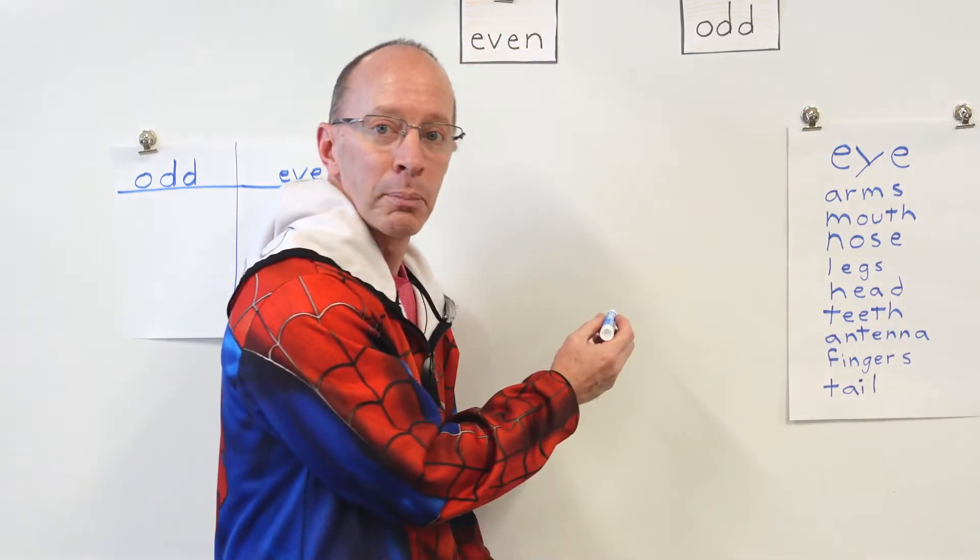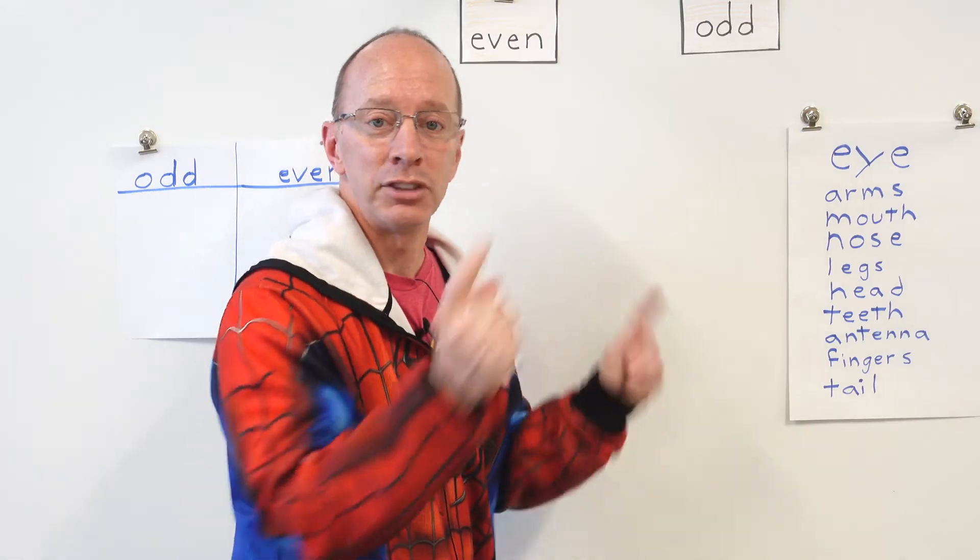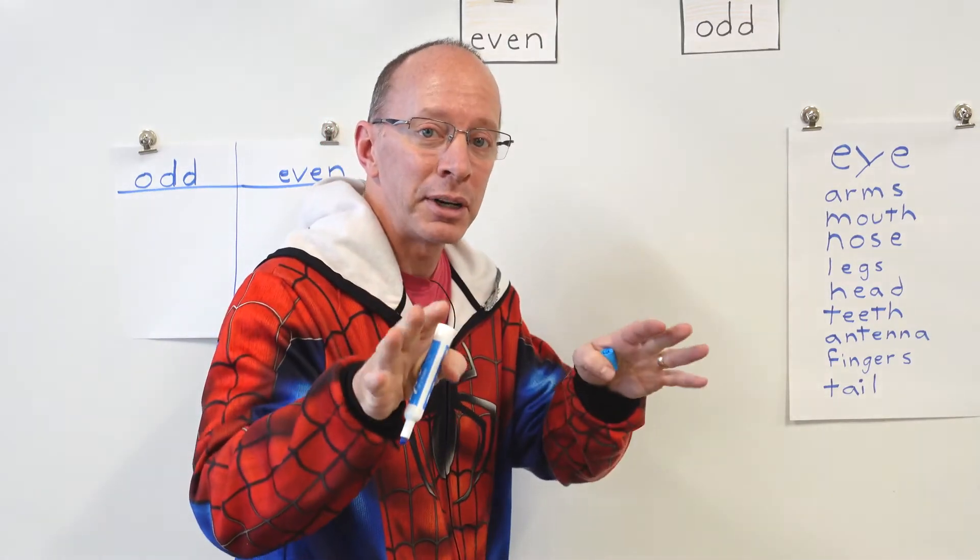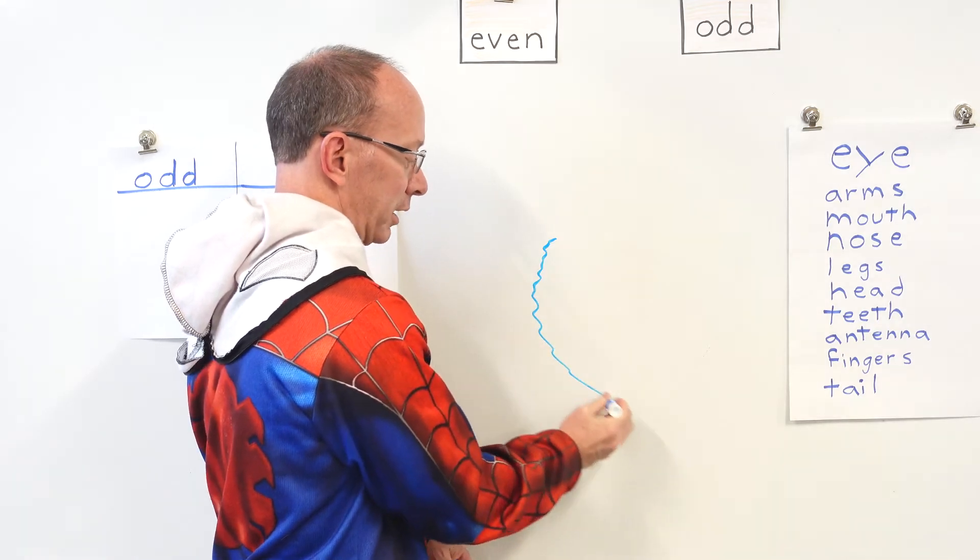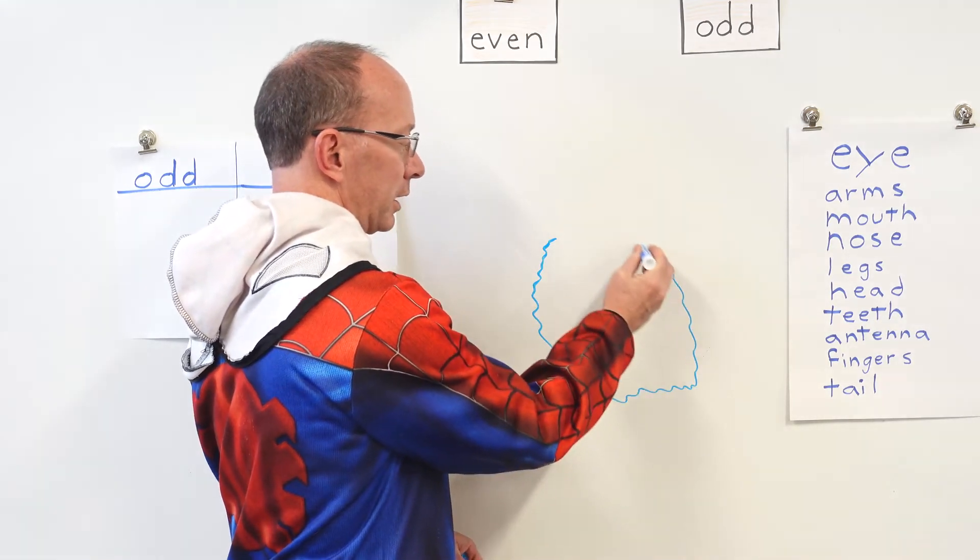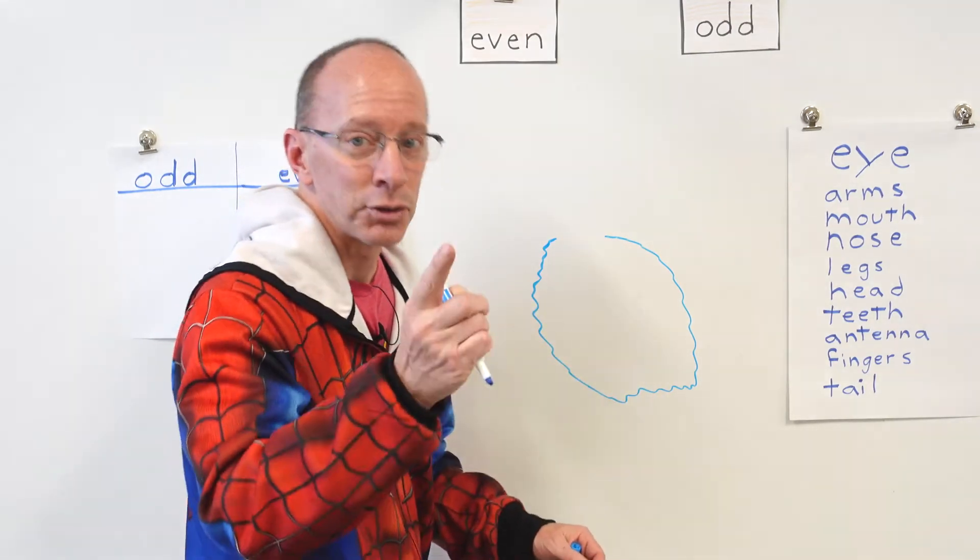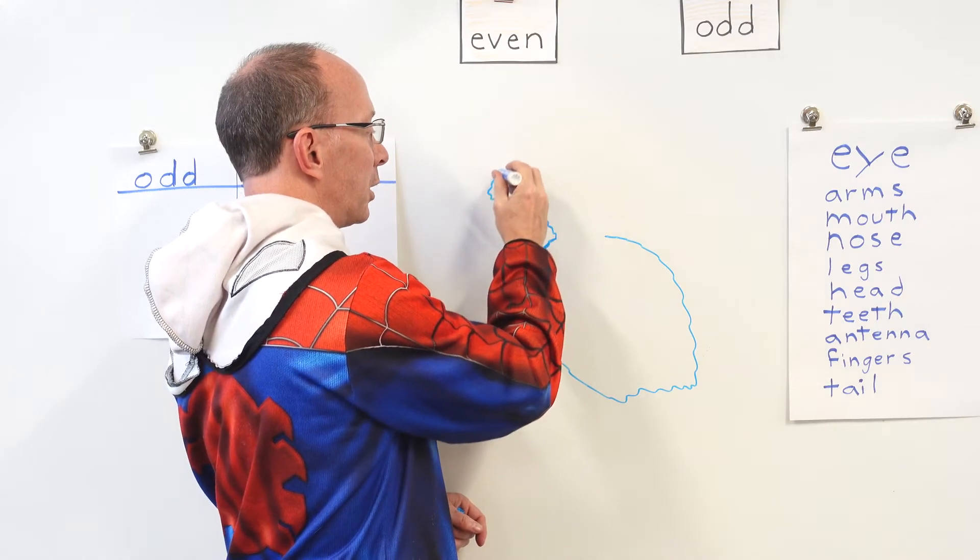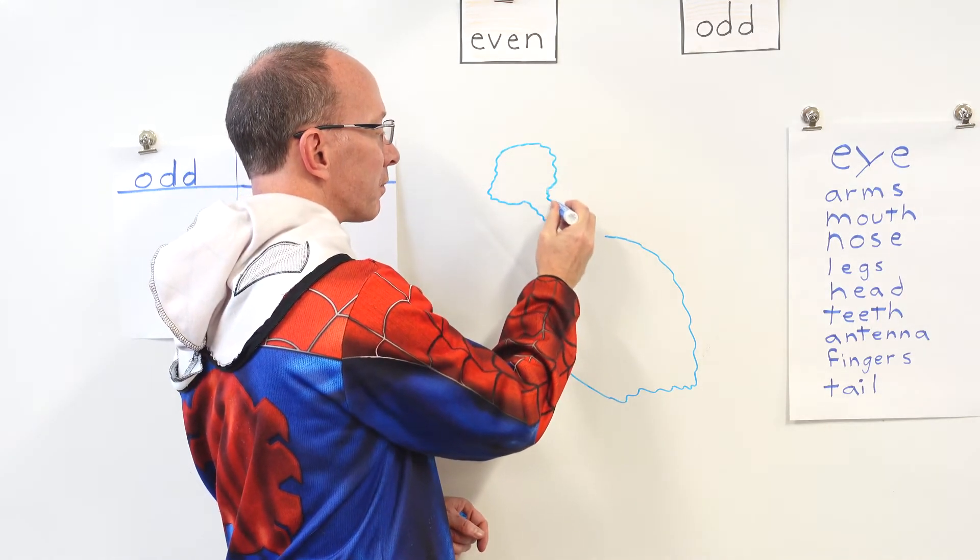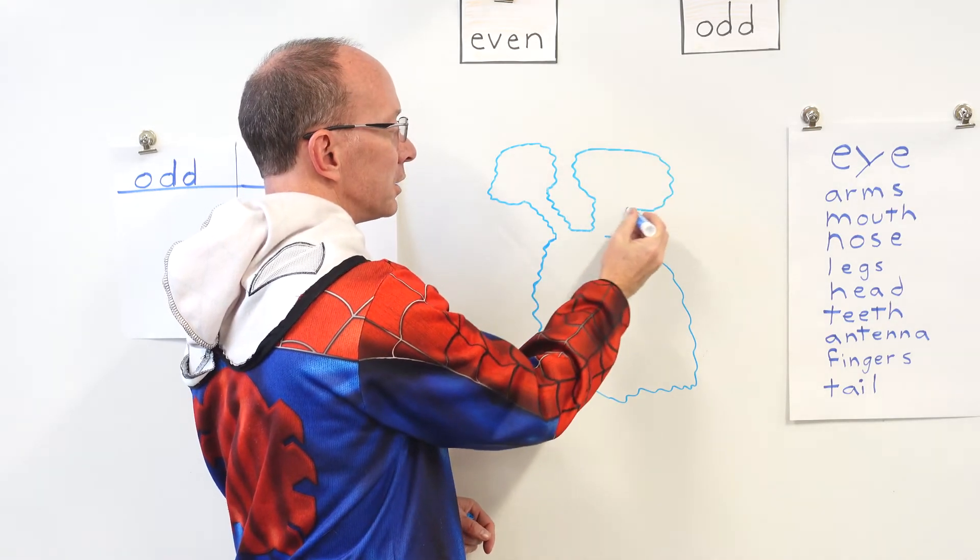For instance, right now what I'm going to do is I'm going to draw the body of my monster. And please, you've got to be creative. Don't copy mine. You've got to be creative with your own. So what I'm going to do is I'm just going to draw a body right here. All right. And then I'm going to put some heads on it. Did I say heads? That's right. I'm going to put two heads on my monster right here. Just like that.